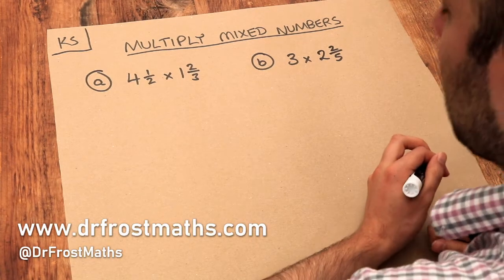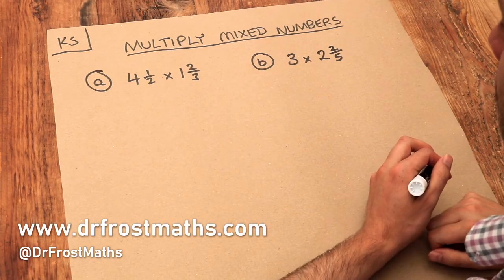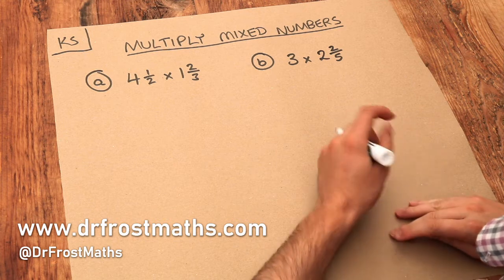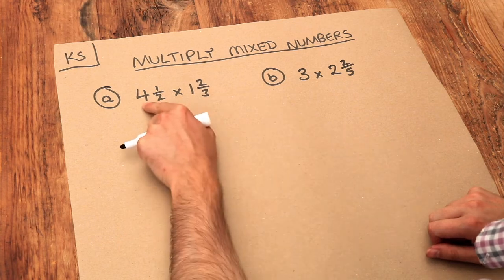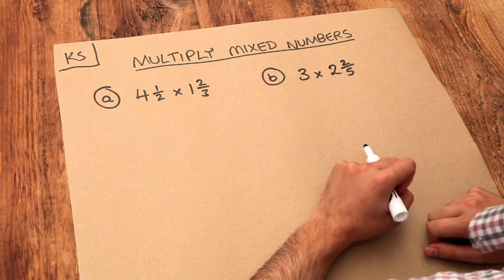Hello and welcome to Dr. Ross Mass's key skill video on multiplying mixed numbers. Remember, a mixed number is when each number has a whole part and a fractional part, so four and a half is a mixed number.